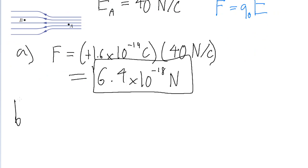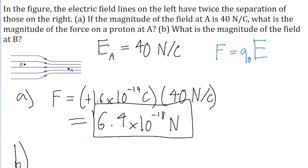Part B of the problem asks us to find the magnitude of the electric field where point B is on the left-hand side of the diagram. Something that's useful to remember is that by convention, the strength of the electric field is proportional to the crowdedness of the field lines. So because the problem tells us that the electric field lines on the left have twice the separation of those on the right...